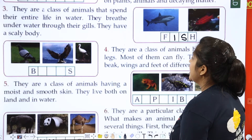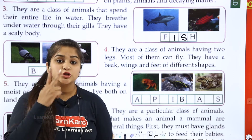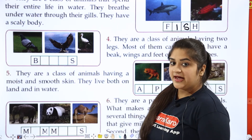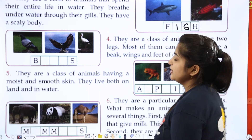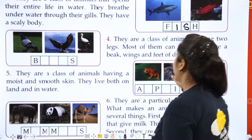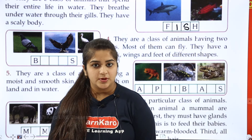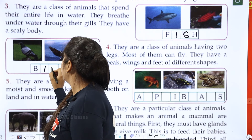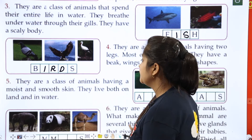The next class of animals have two legs. Most of them can fly. They have a beak — called a chonch — wings to fly, and feet of different shapes. These animals are known as birds. B-I-R-D-S.